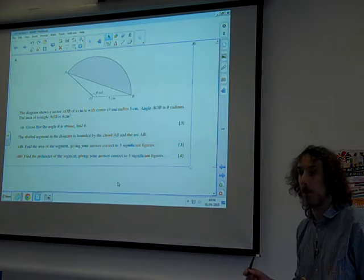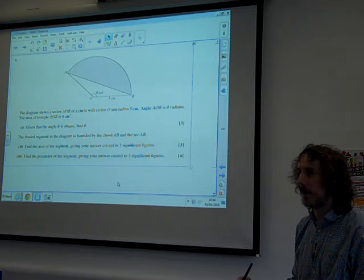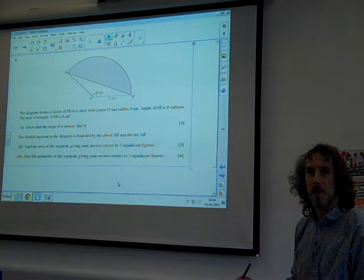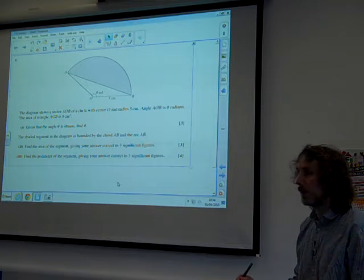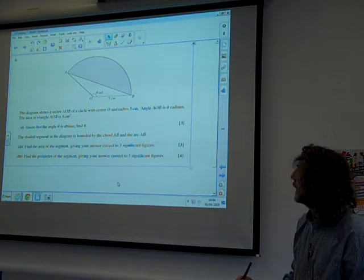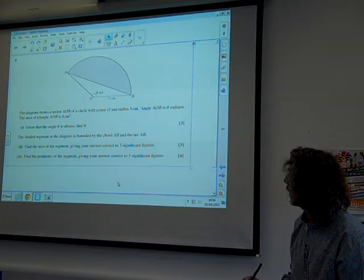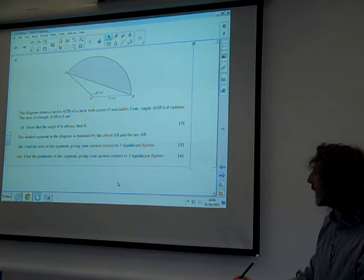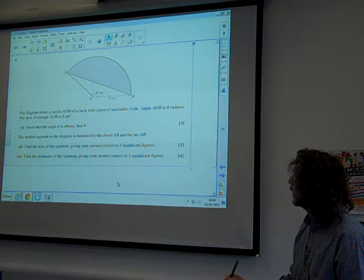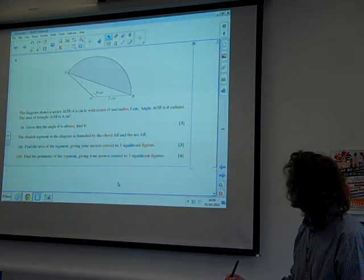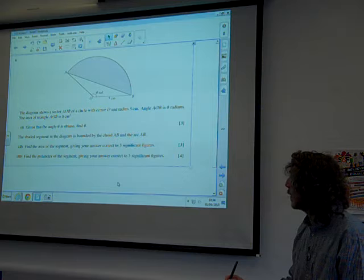Question 8 on the paper was also trigonometry, and we start with this really familiar shape of a sector of a circle with the end bits shaded in, so you make a triangle and then a segment at the end of it. The diagram shows the sector AOB of a circle with centre O and radius 5. Angle AOB is theta radians, the area of the triangle AOB is 8 centimeters squared.